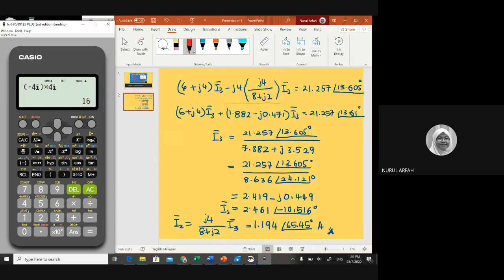And you divide by 8 plus j2. Put it in brackets: 8 plus 2i. Why i? Because this is the imaginary part. Do that, and please make sure you set it to decimal point. That's why you get 1.822 minus j0.471.